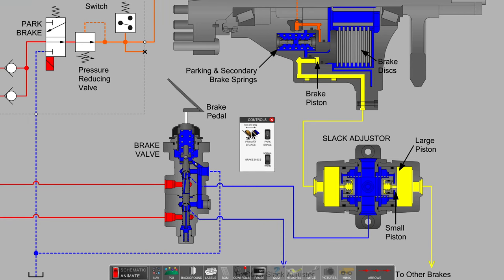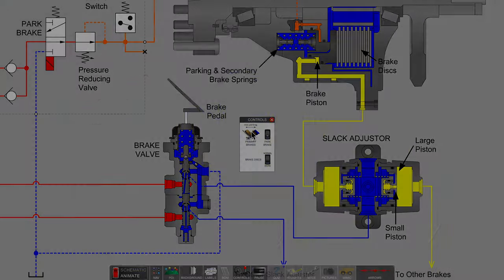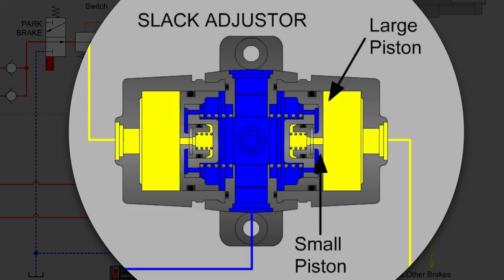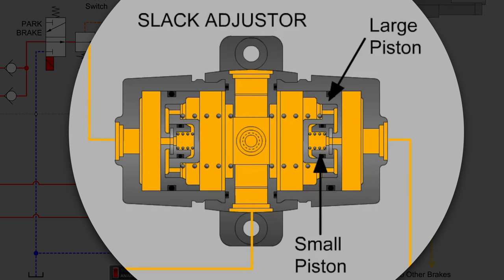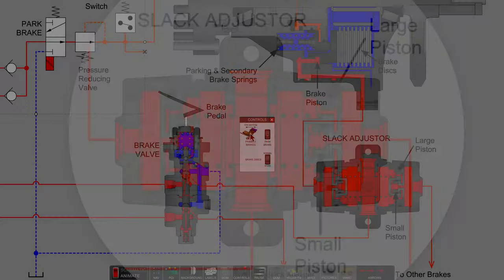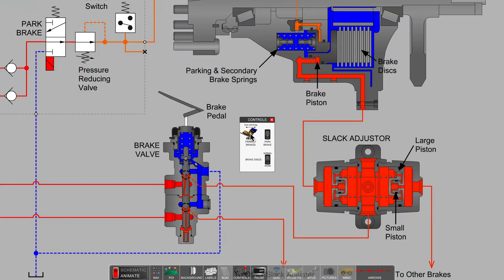Moving over to have a look at the slack adjuster, what we see is that there is a large piston and a small piston. And when the operator steps on the brake, the first thing that happens is the large piston pushes out flow and moves it into the brake disc housing. But really, again, there's very little flow.